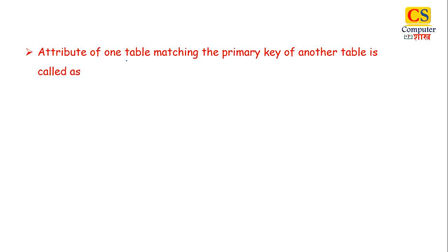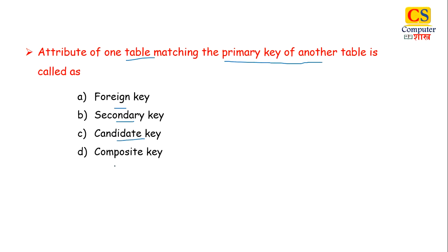Next is, attribute of one table matching the primary key of another table is called as. Options are foreign key, secondary key, candidate key, composite key. So the right answer for this question is option A. We will discuss all the other keys.